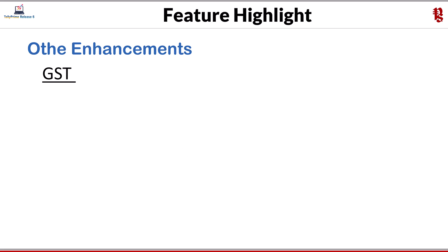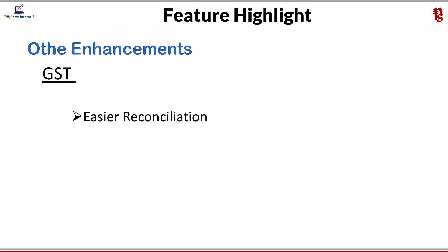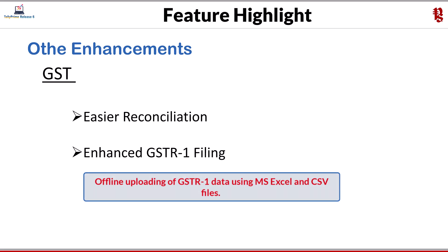Other GST enhancements include easier reconciliation — you can now reconcile GST transactions even if there is a difference in the taxable amount between your books and the portal data. Next, enhanced GSTR 1 filing: you can upload GSTR 1 data offline using MS Excel and CSV files, providing greater flexibility and convenience for offline filing.